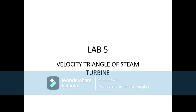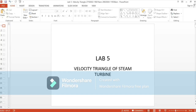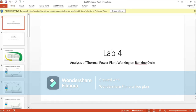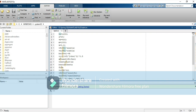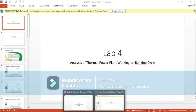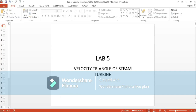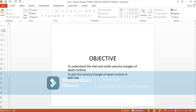Assalamu alaikum class. Today we are going to start the velocity triangle of a steam turbine. In the previous lab we already analyzed the Rankine cycle and the parameters of a thermal power plant. Today in detail we are going to analyze the velocity triangle of a steam turbine. The objective of our lab is to understand the inlet and outlet velocity triangle and then plot it in MATLAB.